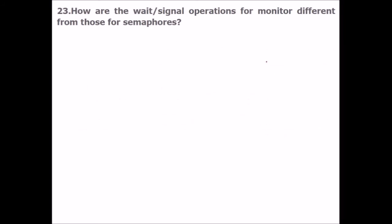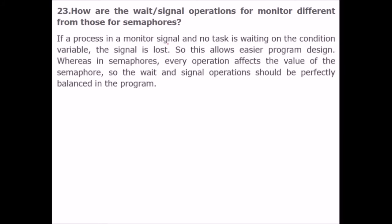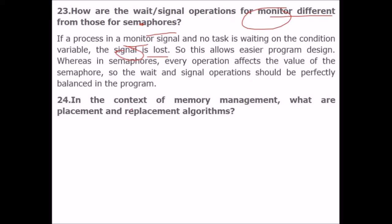How are the wait and signal operations for a monitor different from a semaphore? In a monitor, if a process signals a condition variable and no process is waiting on it, the signal is lost. This allows easier program design. In a semaphore, every operation affects the value of the semaphore, so wait and signal operations must be perfectly balanced. In the monitor case the signal is lost, but in the semaphore case it is not lost and is always accounted for.